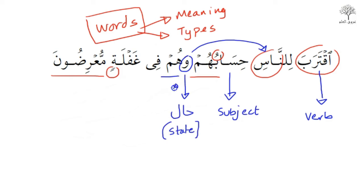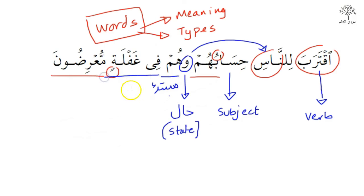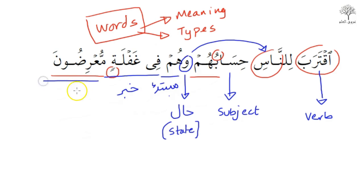Hum — this is a pronoun. We're going to learn about pronouns and the different rules regarding them. Here it occurs as a mubtada. Then you have fi ghaflatin mu'ridoon — there are two possibilities here. If you've studied Arabic grammar, you know the two khabar.